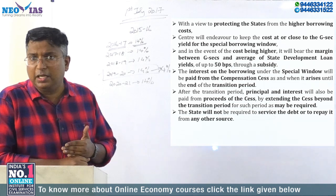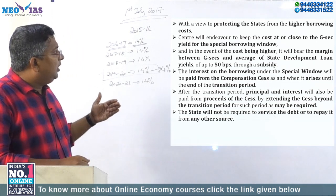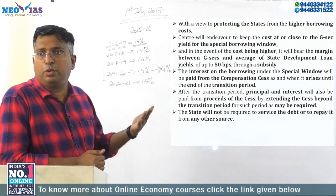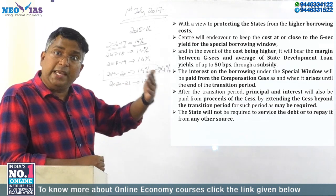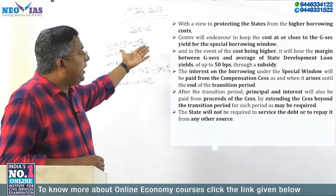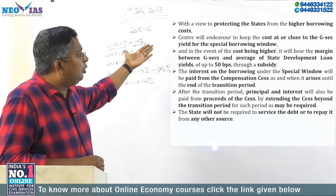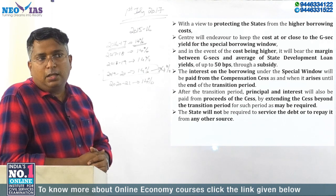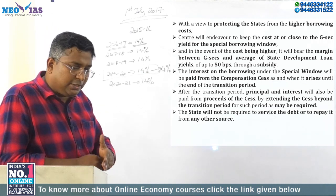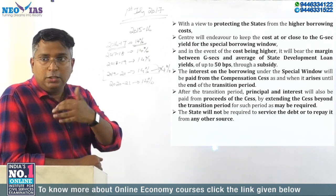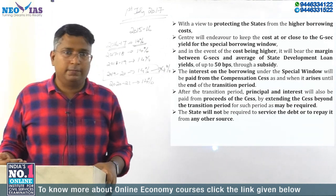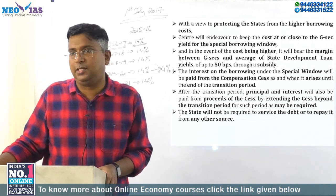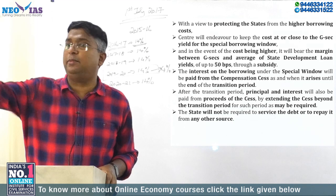With a view to protect the state from higher borrowing costs — which occurs when the state directly borrows from the market — the center, under the special window borrowing program, is borrowing on behalf of the states. Unlike direct central government borrowing, when the center borrows on behalf of states under the special window, there may be a slight difference in interest rate. But if states directly go and borrow, the difference is much bigger.